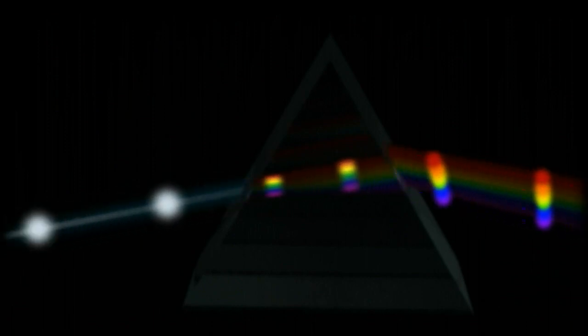The color of the photon depends on the energy difference between the two shells. This explains the spectral lines that identify an element.